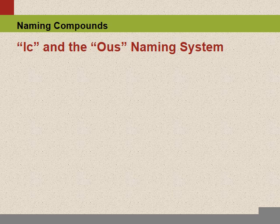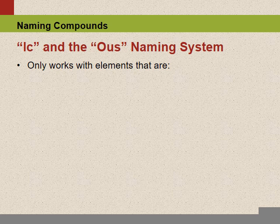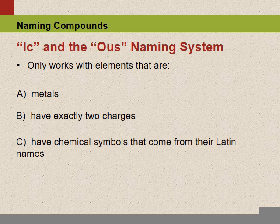We're going to look at a specific way of naming ionic compounds called the ic and ous naming system. There are some requirements for elements to be named using this system. Firstly, it only works if we're dealing with a metal. Secondly, that metal has exactly two possible charges. And lastly, the chemical symbol of that metal comes from its Latin name, not its regular name, so there is generally no match between the element's name and its symbol.